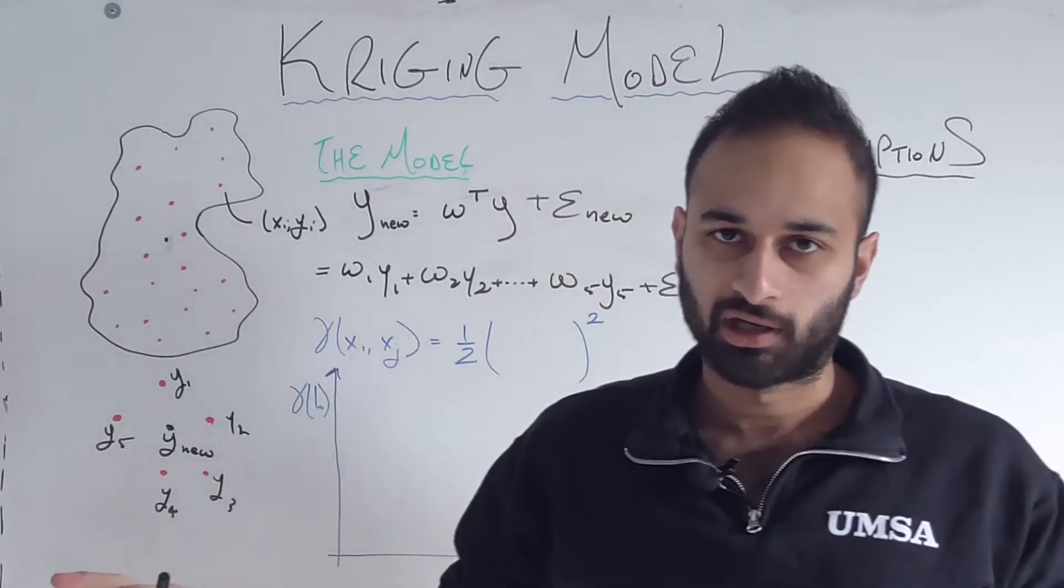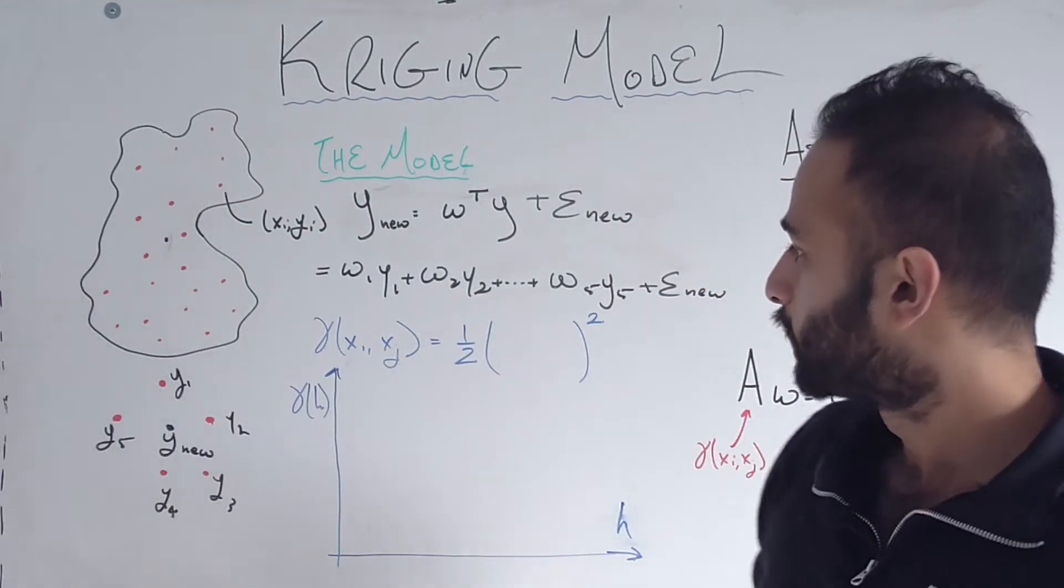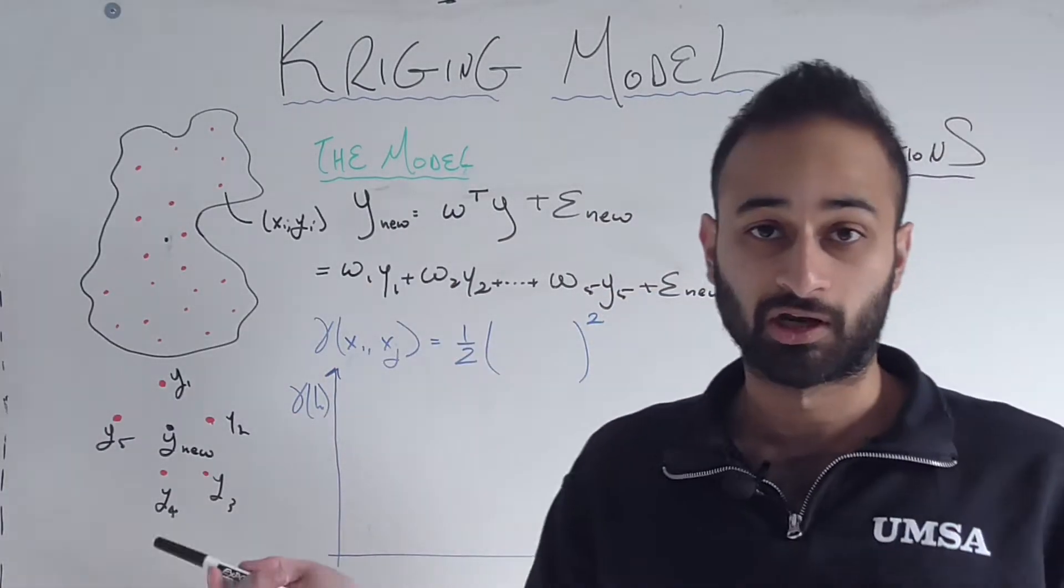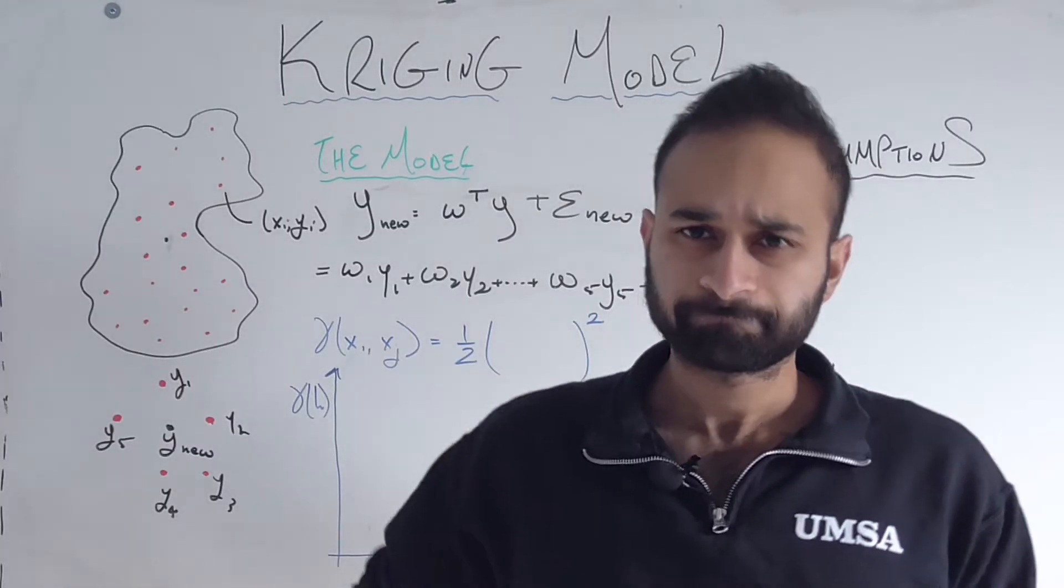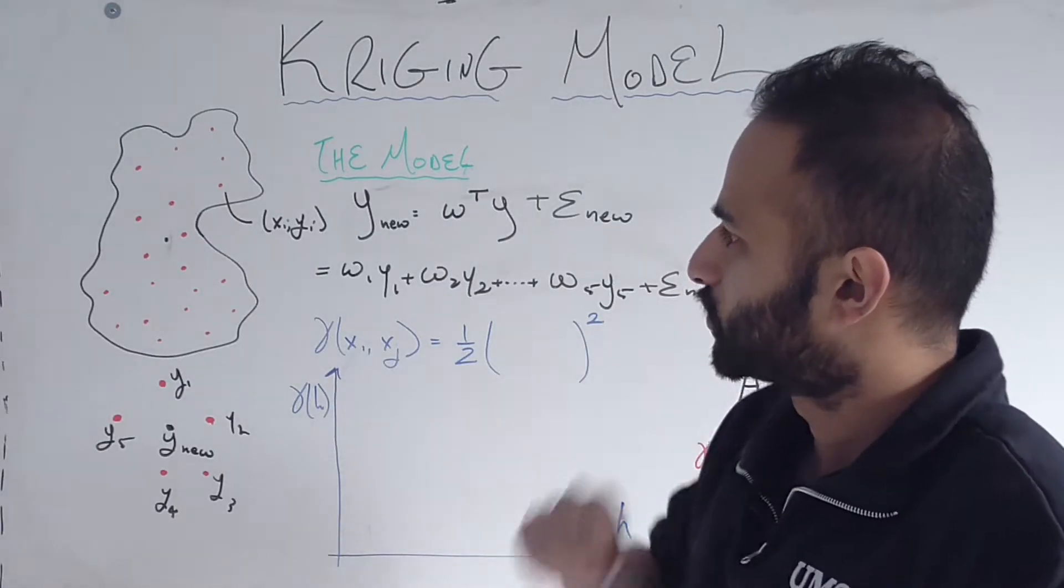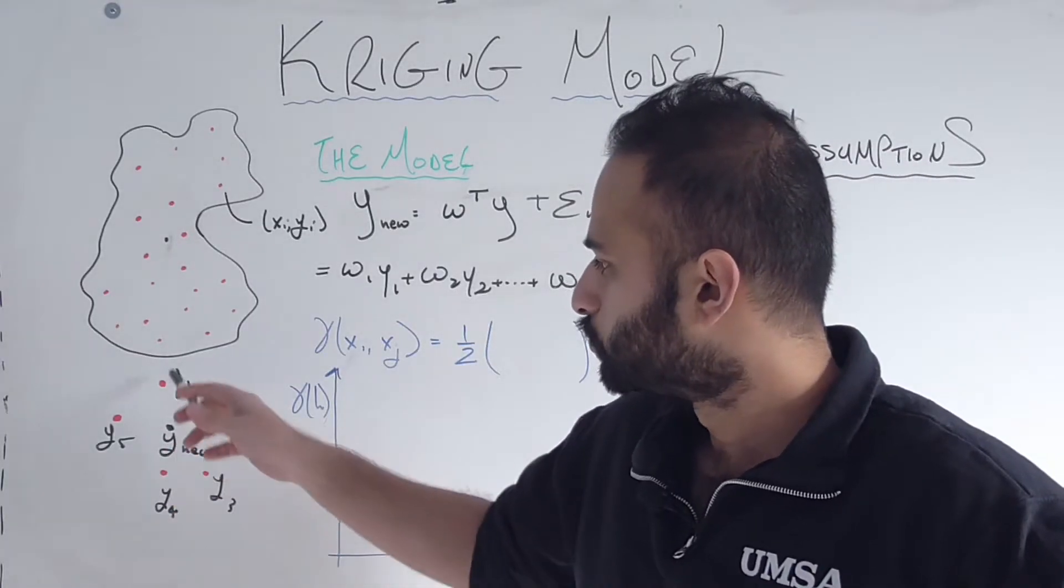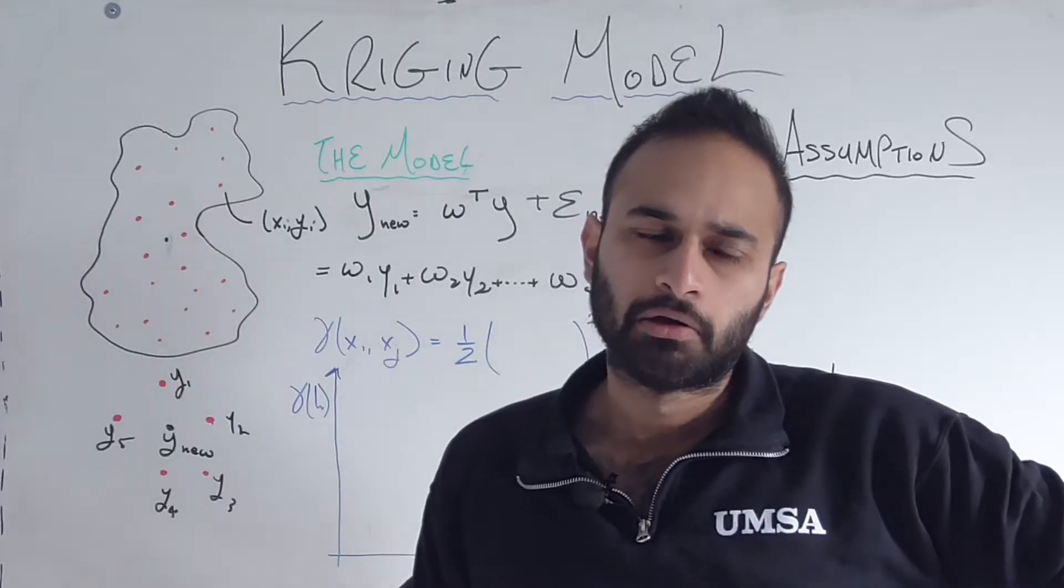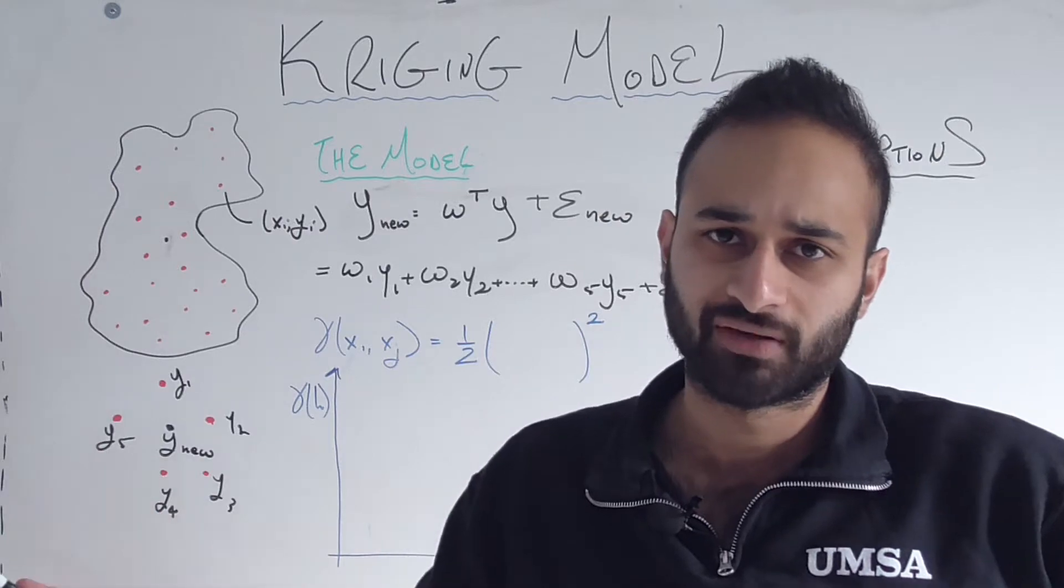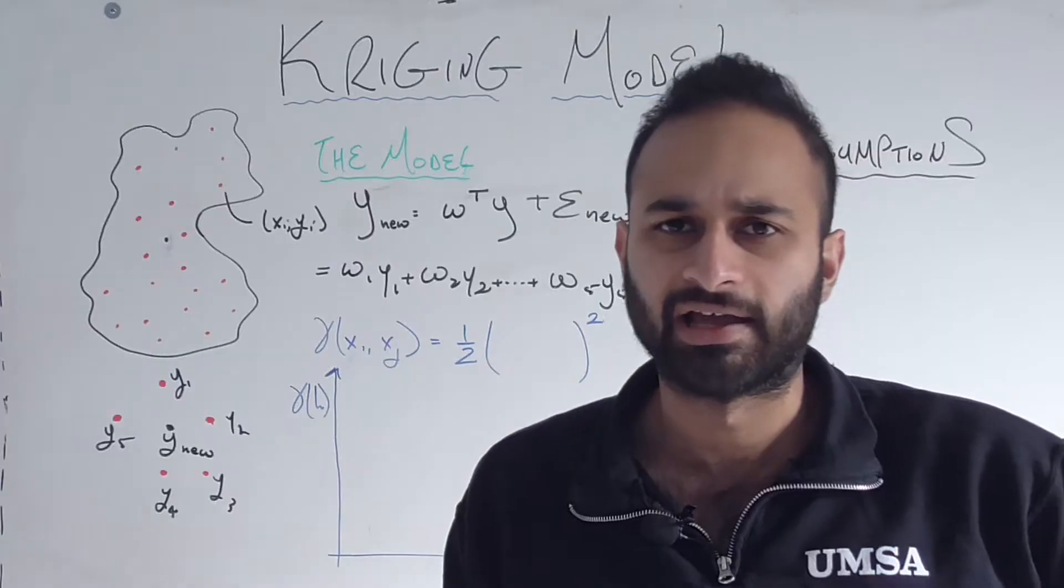Now the only unknown here, right, if I knew what the weights were W1 through W5, then I could just plug in the weights, I could plug in my five known elevations, and I could get a pretty good prediction about what my new elevation should be. But how am I going to get at those weights? Well, the only other piece of information I have here are the distances between my unknown point to my five closest neighbors. And maybe just kind of crudely, the closer one of my neighbors is to me maybe the more weight I should give it, the further away it is maybe the less weight I should give it. But how do I formalize this idea?